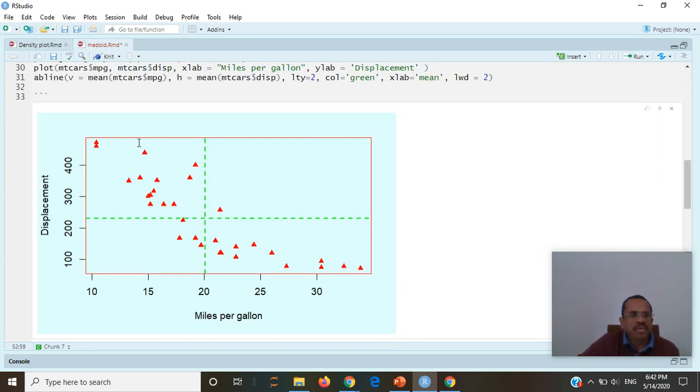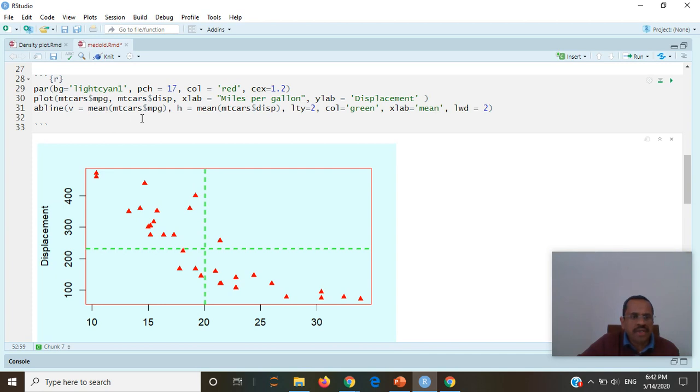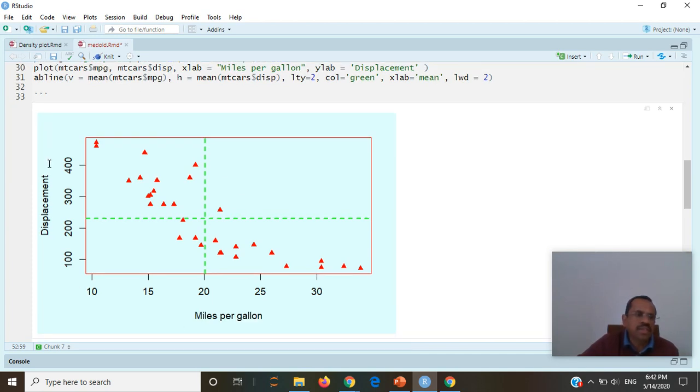I took the mtcars dataset and I plotted miles per gallon versus displacement as a scatter plot. Then I calculated mean from both directions, so I get a point which is in center, which is called a centroid. For two dimensions or multiple dimensions it is called centroid. For one dimension it is called mean. So I get this point, centroid, and there is no member of that vector that exists here, but this is the nearest member of the vector. This is called medoid.